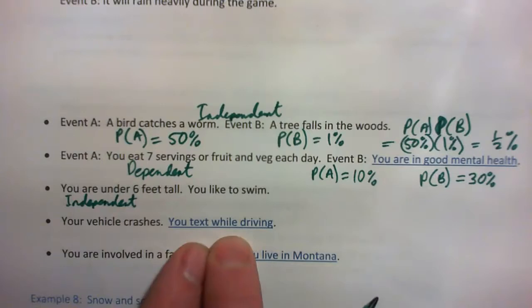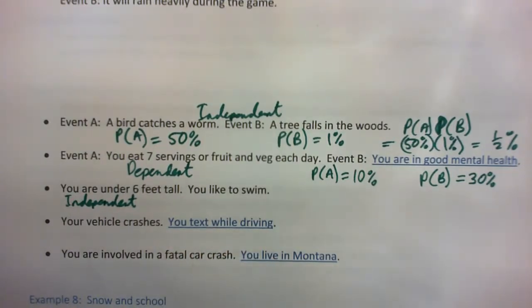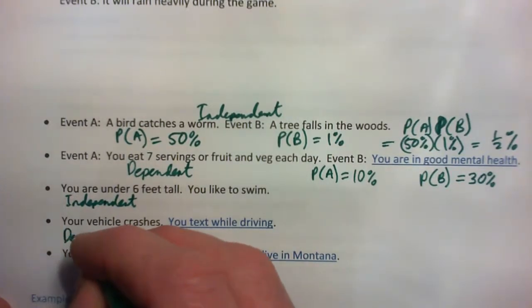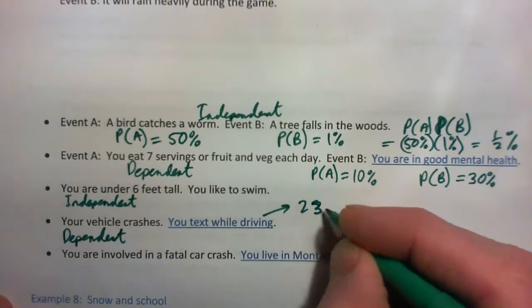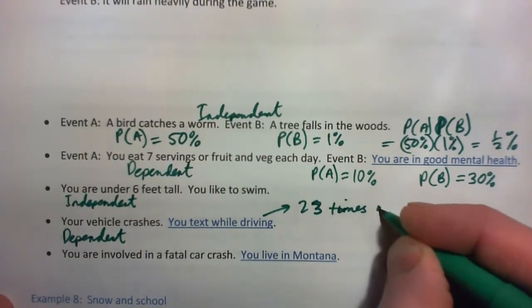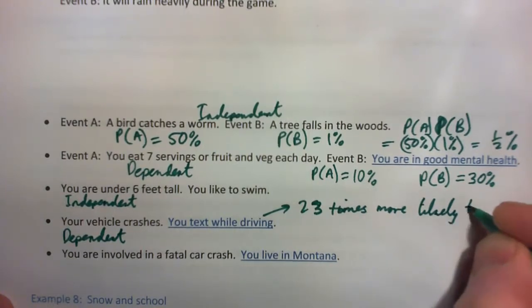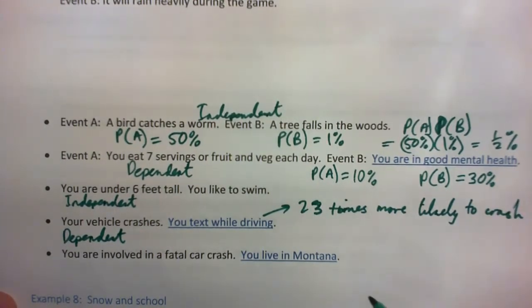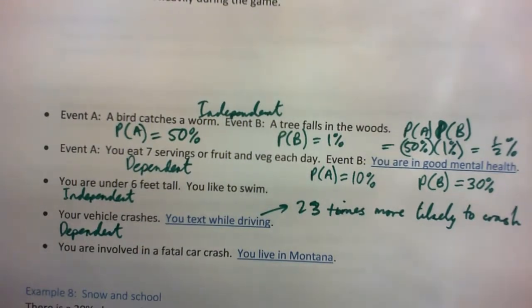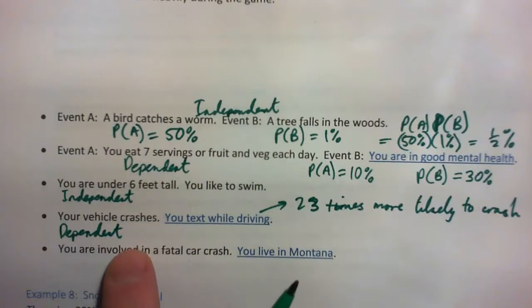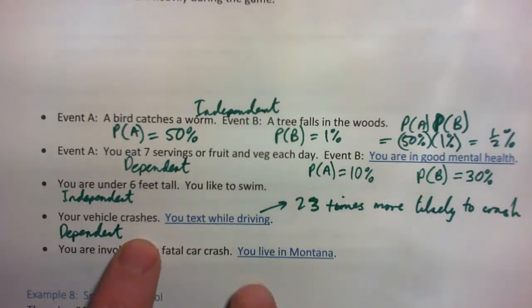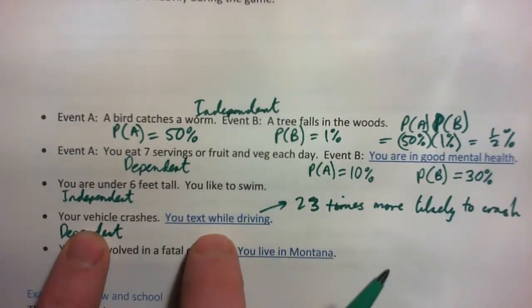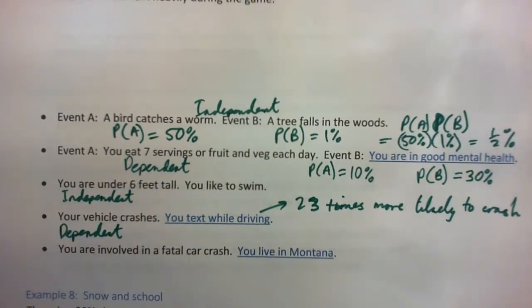How about this one: your vehicle crashes and you text while driving — are those dependent or independent? We would say those are dependent. One study shows that you're 23 times more likely to crash while texting, and lots of other studies show similar things. So the probability of crashing goes up depending on whether you're texting. These are definitely dependent events, not independent.